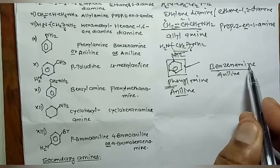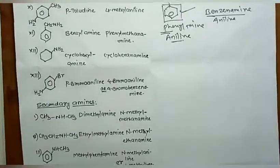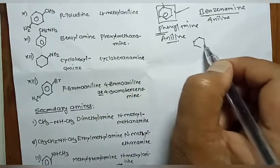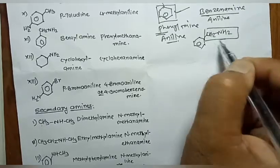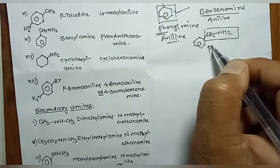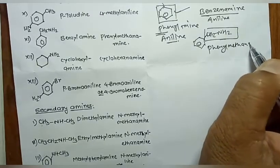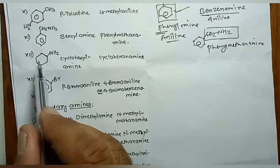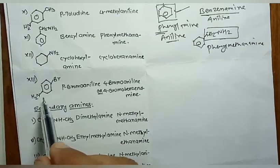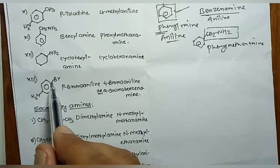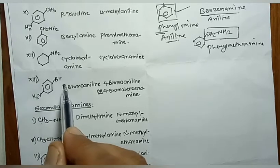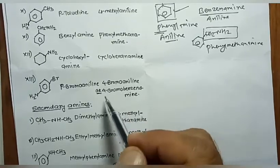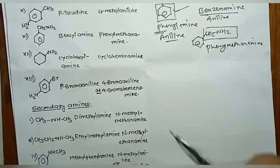Further examples: C₆H₅CH₂NH₂ is 'benzylamine' (common) and 'phenylmethanamine' (IUPAC), since the phenyl group is attached to the methanamine carbon. A cyclohexyl group gives 'cyclohexylamine' or 'cyclohexanamine'. For a bromine-substituted aniline at the para (fourth) position, the common name is 'p-bromoaniline' and the IUPAC name is '4-bromoaniline' or '4-bromobenzenamine'.